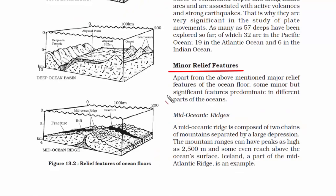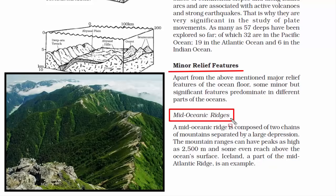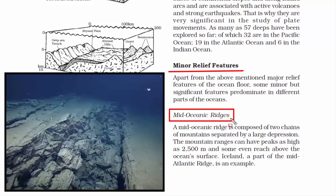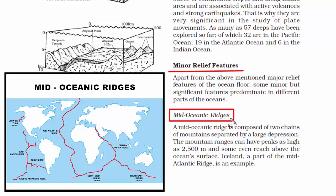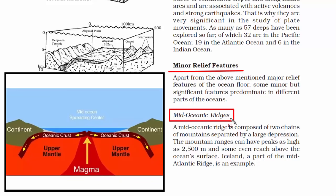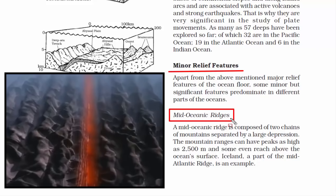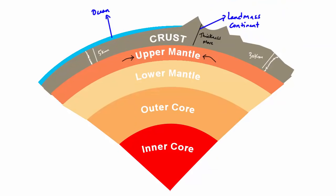Now we will look at some minor relief features. The first is mid-oceanic ridges. A ridge is a long narrow hill top like a mountain range — basically an elongated uplifted piece of landform. Mid-oceanic ridges are underwater mountain systems formed by plate tectonics. Another term for the process is sea floor spreading.